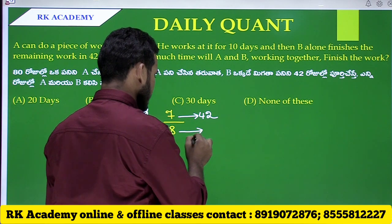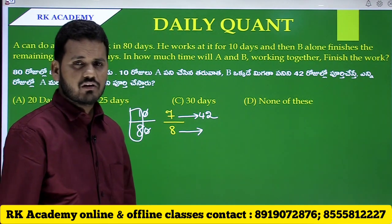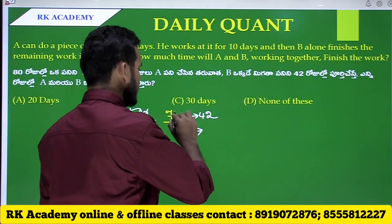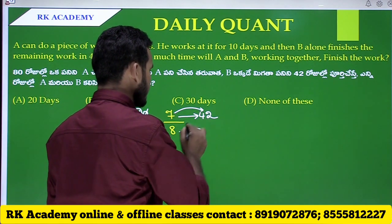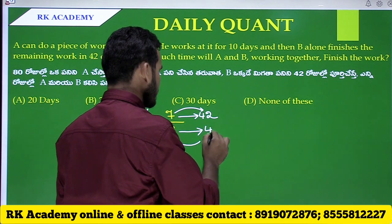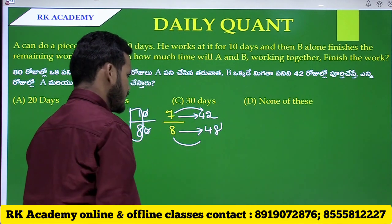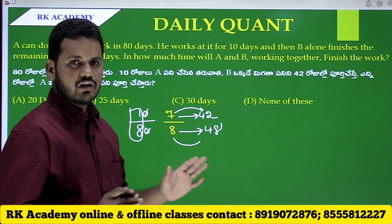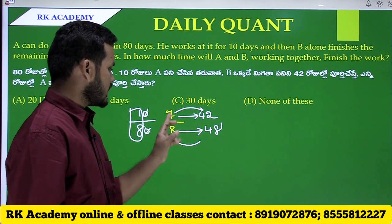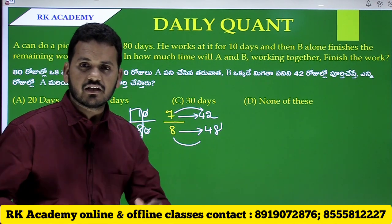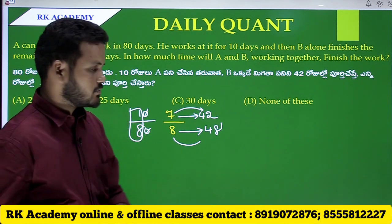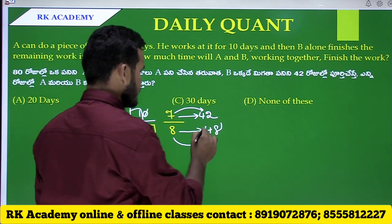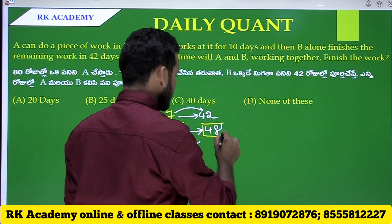We call this the original work. The total is 8 parts. A completes the first 1 part, and B completes the remaining 7 parts in 42 days. So B's full work takes 48 days. A is 80 days and B is 48 days.